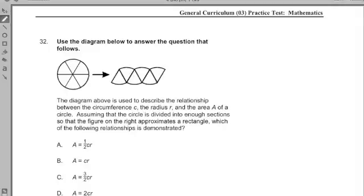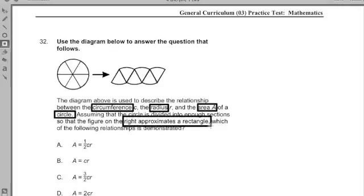I approach this because I'm stronger in the visual and mathematical way of thinking. Those are my two strengths. If I did start with the reading portion, I should have highlighted in my brain circumference, the radius, how the radius is involved in circumference, and the area, all of a circle. I should know I'm going to be thinking about the area of the circle and the circumference of a circle. It's saying this is essentially a rectangle, which of the following relationships is demonstrated?